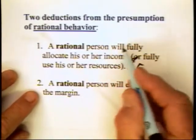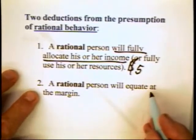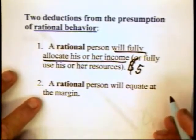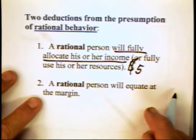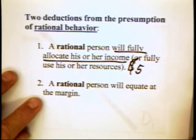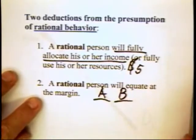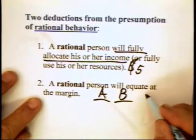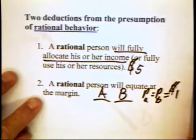So we know a rational person will fully allocate his or her income. A rational person will also equate at the margin. The individual will continue to consume goods until the marginal utility of the last unit of any one good equals the marginal utility of every other good. Let's suppose we only have two goods in the world and the price of these two goods are the same — that is, price of A equals the price of B, and they're both equal to $1.